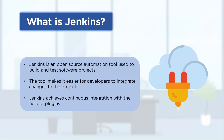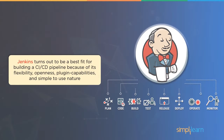Jenkins achieves continuous integration with the help of plugins — another key feature. There are so many plugins available; for example, if you want integration for Kubernetes or Docker, those plugins may not be installed by default, but you can install them and those features will be embedded within your Jenkins. This is the main benefit of Jenkins: it is one of the best fits for building a CI/CD pipeline because of its flexibility, open source nature, and plugin capabilities.